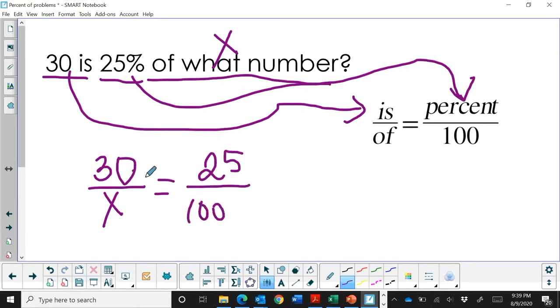Let's cross multiply. 30 times 100 is 3,000. 25 times x is 25x. Then we just divide by 25.